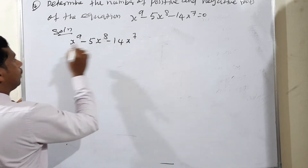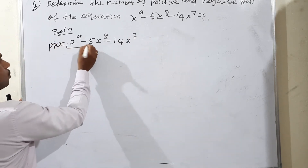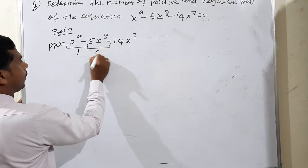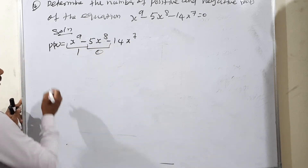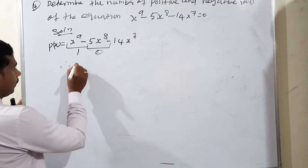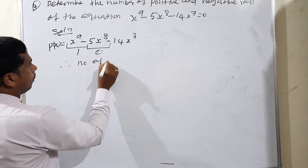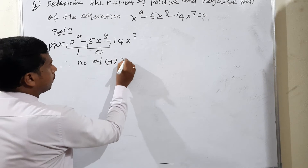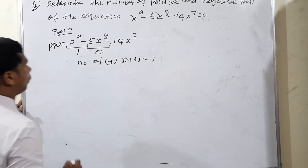So, for P(x), consider the sign changes: plus to minus — 1 sign change; minus to minus — no sign change. Therefore, the number of positive roots is equal to 1.